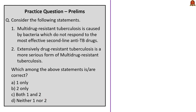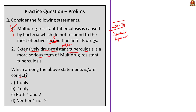The next question considers two statements about tuberculosis. The first statement says multi-drug resistant tuberculosis is caused by bacteria that do not respond to the most effective second-line anti-tuberculosis drugs — this is wrong. MDR-TB is caused by bacteria that do not respond to isoniazid and rifampicin, the two most powerful first-line anti-tuberculosis drugs. It is extensively drug-resistant tuberculosis (XDR-TB) that does not respond to the most effective second-line drugs and is the more serious form. So the first statement is wrong, the second statement is correct, and the correct answer is option B — 2 only.